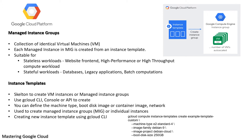Use an instance template any time you want to create VM instances based on a pre-existing configuration. If you want to create a group of identical instances, you must use an instance template to create a MIG. Create a new instance using the gcloud compute instance-template create command.